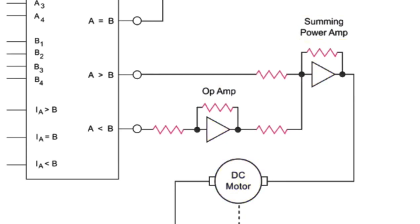For example, if the A is less than B output goes high, the op-amp inverts the plus 5-volt signal to minus 5-volts. As the minus 5-volts is applied to the summing power amp, it is amplified and inverted to positive potential. The output of the summing power amp is applied directly to the DC motor of the actuator.